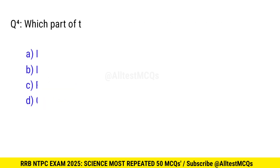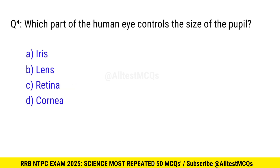Question 4. Which part of the human eye controls the size of the pupil? Right option is A, iris.